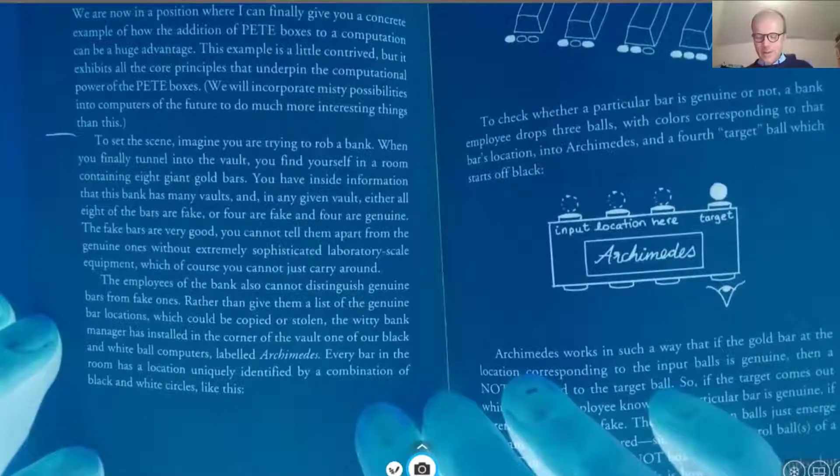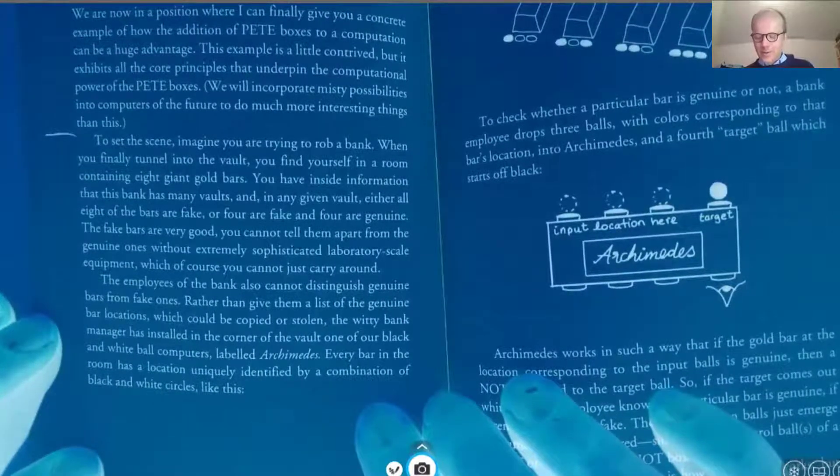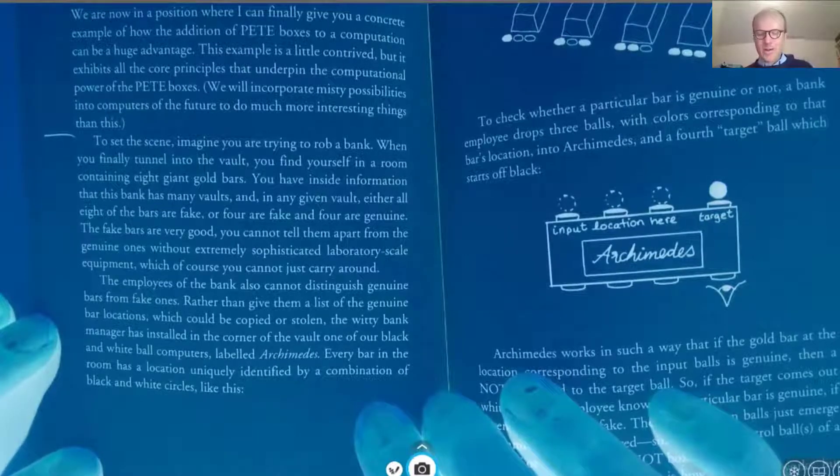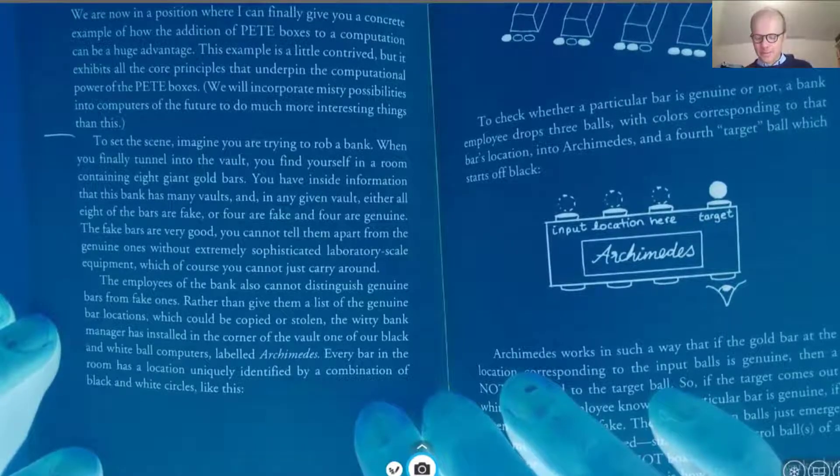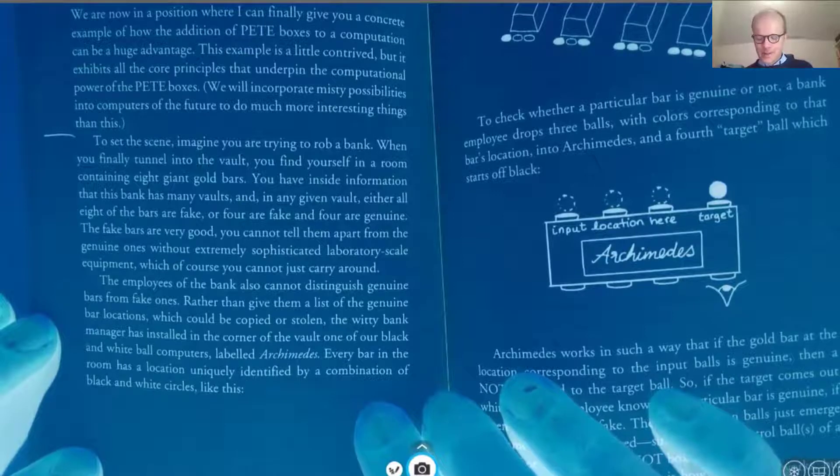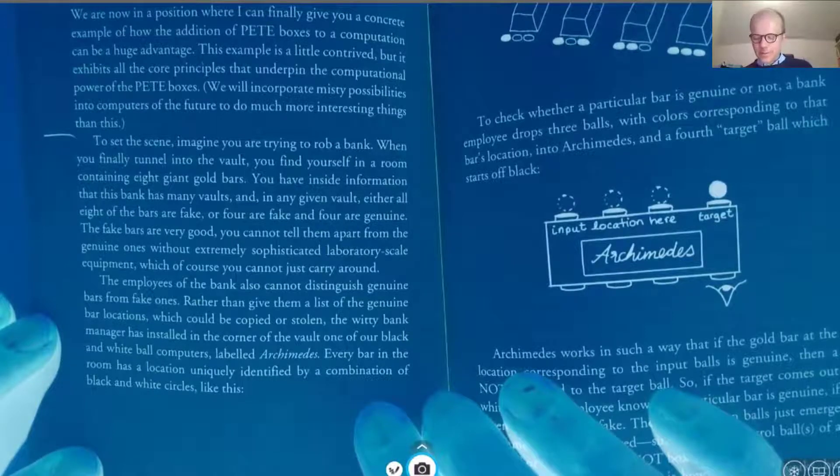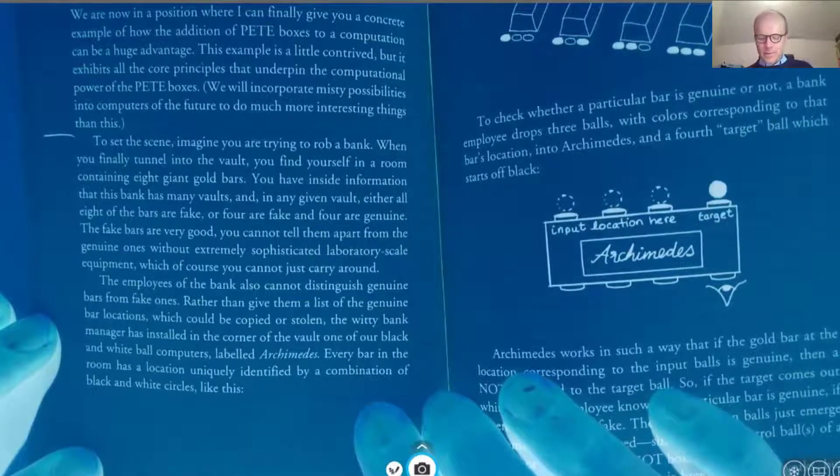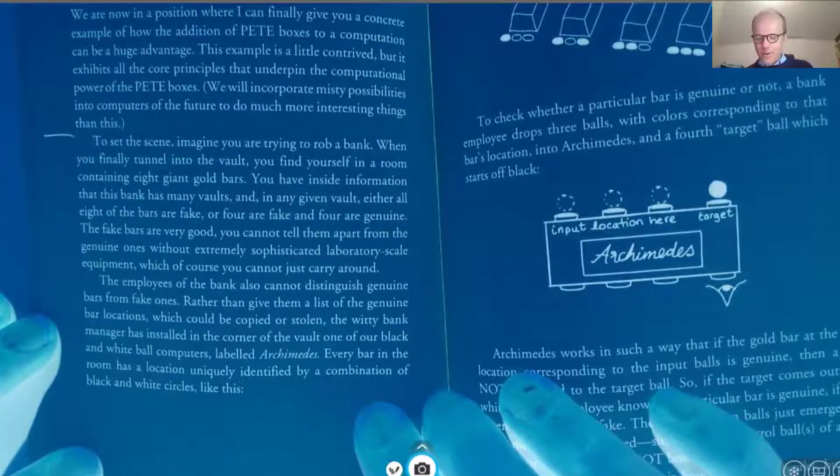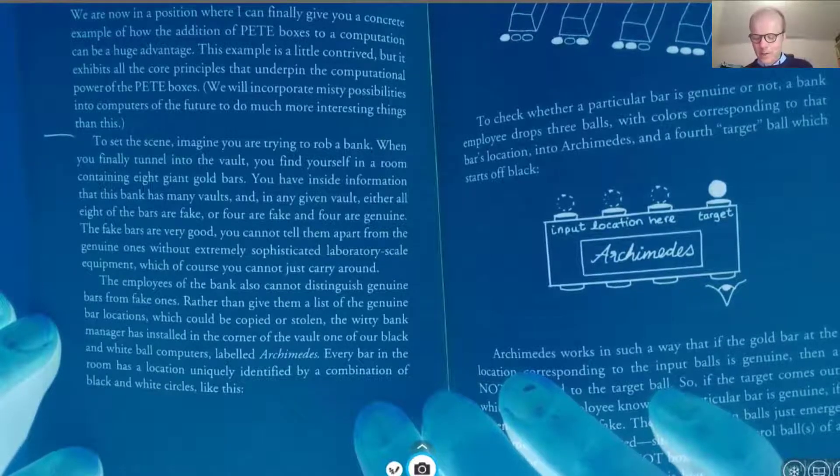When you finally tunnel into the vault, you find yourself in a room containing eight giant gold bars. You have inside information that this bank has many vaults. And in any given vault, either all eight of the bars are fake or four are fake and four are genuine.